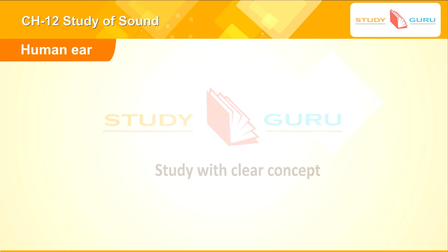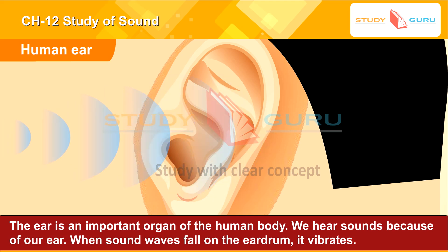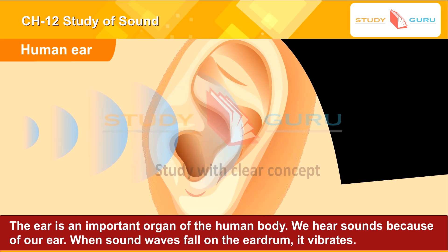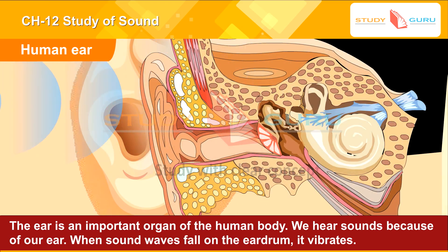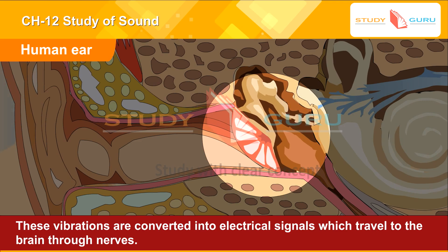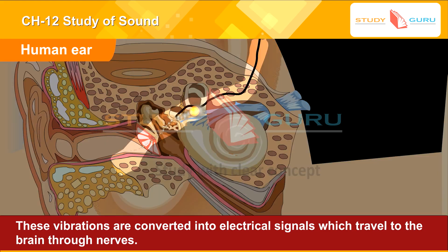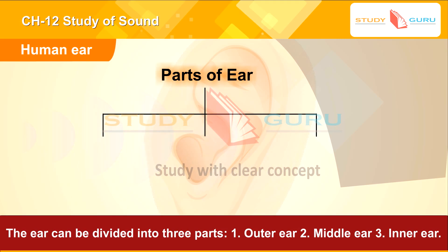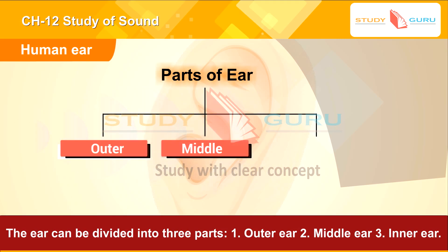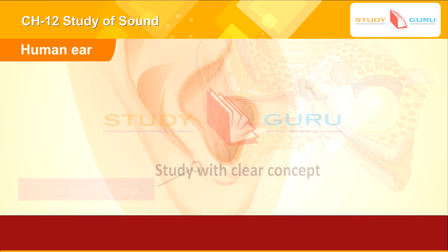The ear is an important organ of the human body. We hear sounds because of our ear. When sound waves fall on the eardrum, it vibrates. These vibrations are converted into electrical signals which travel to the brain through nerves. The ear can be divided into three parts: one, outer ear; two, middle ear; three, inner ear.